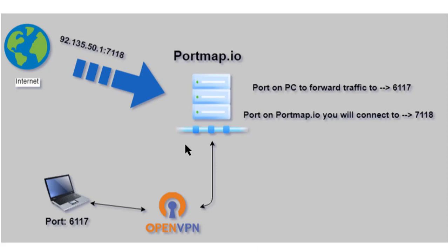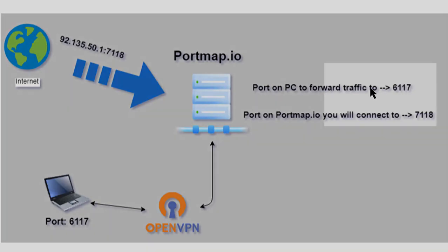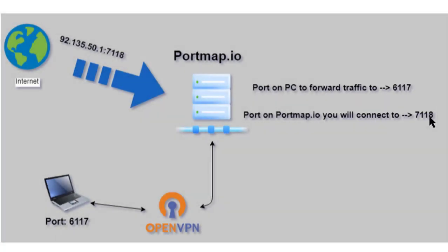Before going ahead I need to clear one more thing. We are dealing with two ports here — one is 6117 and the other is 7118, just as an example. You might think in simple port forwarding we only deal with one port, but here two ports are mentioned. You will only deal with the portmap.io port, which is going to be 7118, and portmap's IP. The other port, 6117, is your tool port which you will be listening on your laptop — you don't need to deal with it beyond just listening on it.